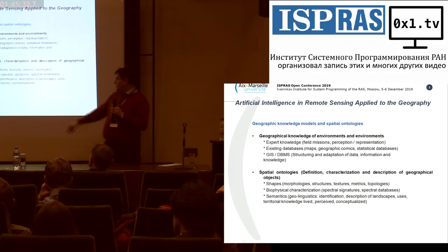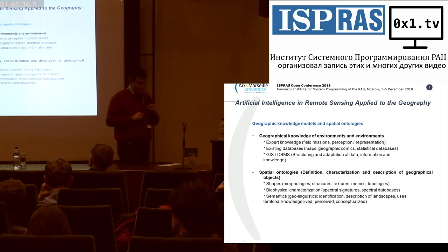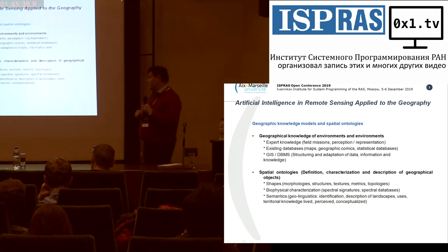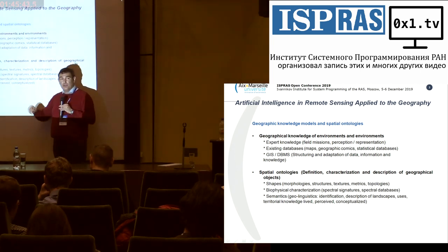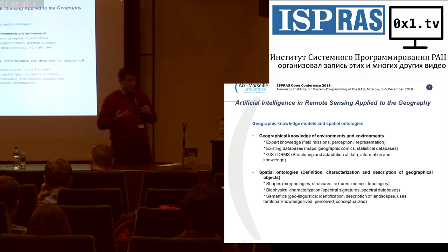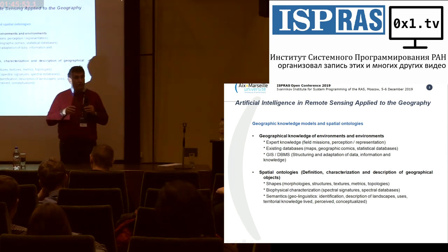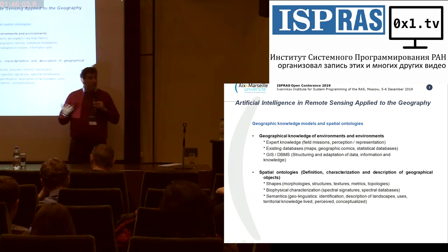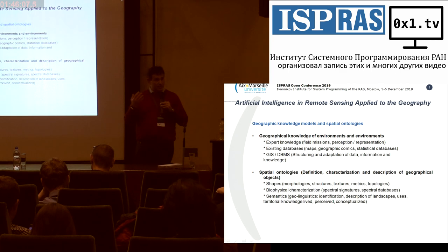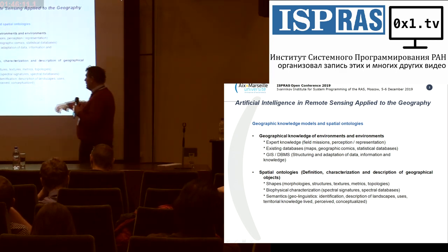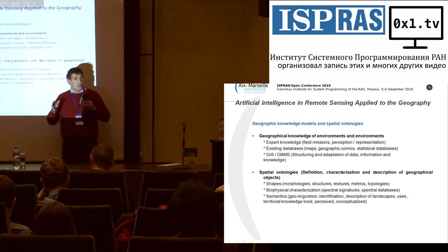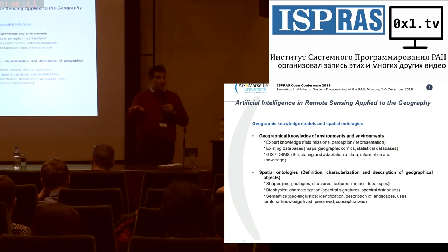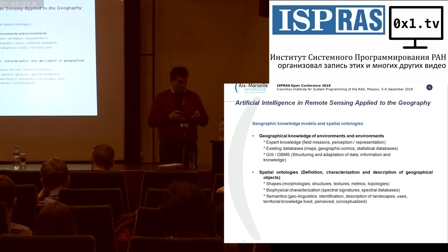The last aspect — where we are working with quite good success with the Russian Academies of Science — is the development of links between geolinguistics: how you talk, how you represent space, how you name geographical objects and landscapes. We make a comparative analysis, especially in Yakutia, between Russian, Yakut, Tungus, and English, trying to understand the perceptions of space. By this way, we integrate a large database of geolinguistics into the algorithm to extract data from remote sensing.